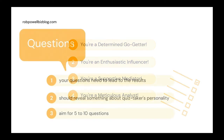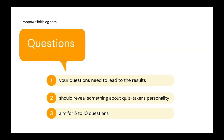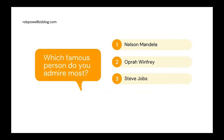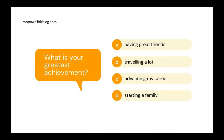Now let's look at the questions. Your questions and answers need to lead to one or other of the different results — and that's why we started with the results first. Try to ask questions that reveal something about someone's personality. For example, you could ask which famous person do you admire most, with answers including Nelson Mandela, Oprah Winfrey, and Steve Jobs. Or you could ask what is your greatest achievement, with answers such as: a) having great friends, b) traveling a lot, c) advancing my career, d) starting a family. The answer will tell you something about the respondent's personality.